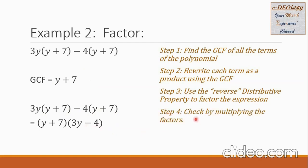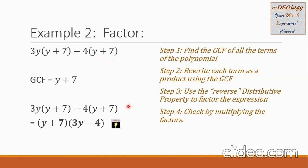Step 4: let us check by multiplying the factors. We want to multiply these factors and get back the original problem. The first group is 3y times the GCF, giving us the first group. And then negative 4 multiplied by the GCF gives us the second group — negative 4 times the quantity y plus 7. So I am sure that these factors are correct, and this is our final answer.